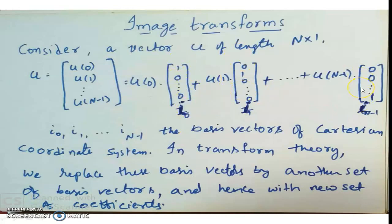These columns of the identity matrix are called basis vectors, which we use to represent vector u. This is not a new concept — it is the same old idea of representing a vector with i-cap, j-cap, k-cap. For example, 2i-cap + 3j-cap + 4k-cap is nothing but 2×[1,0,0] + 3×[0,1,0] + 4×[0,0,1], done here at a higher dimensional space. In transform theory, we try to replace these basis vectors with another set of basis vectors.